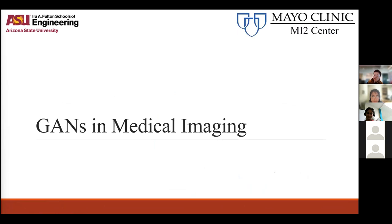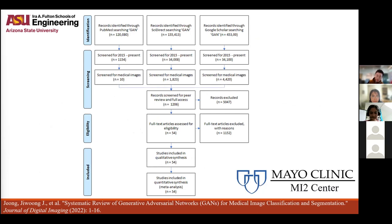Moving on to GANs in medical imaging: we wrote a systematic review of GANs in medical imaging, and following PRISMA guidelines, we see a huge explosion of GAN interest in the medical domain since Goodfellow proposed GANs in 2014. Our review heavily filtered works specifically for medical images from 2015 to mid-2022 and for specific tasks, and we still had a large number of papers. Even a quick Google Scholar search shows tens of thousands of works already.